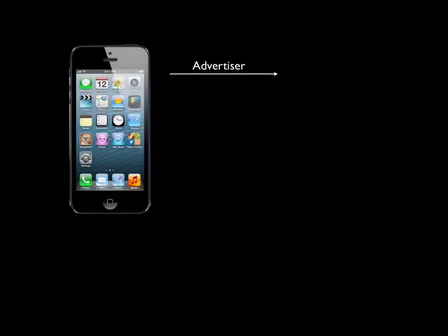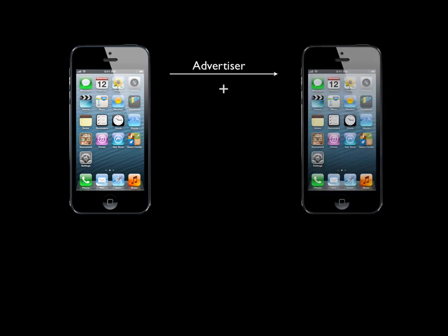The way the Multi-Peer Connectivity framework works: you have an advertiser — the publisher of a service, the host node — but all nodes in the network are basically equal. You advertise a service, then set up a browser that discovers the service and sends a connection or invite request to the advertiser. Once the advertiser accepts, you get connectivity. No sockets, no DNS — it's that simple.